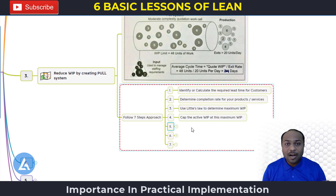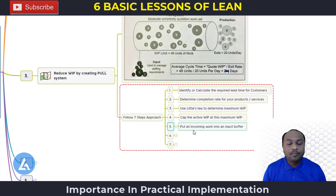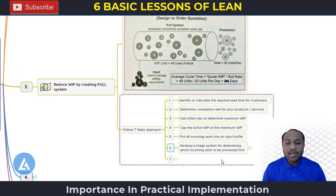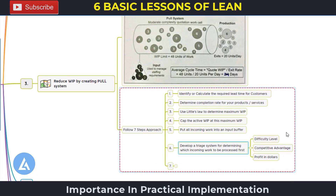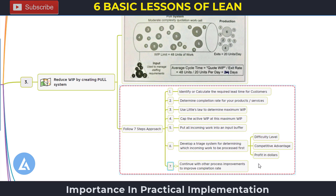In step five, put all incoming work into the input buffer. In step six, develop a drag system for prioritization — determining which incoming work to process first — using three criteria: difficulty level, competitive advantage, and profits in dollars after completion of that work. In step seven, continue with other process improvements to improve the completion rate. Steps one through six focus on reducing work in process; step seven focuses on improving completion rate.